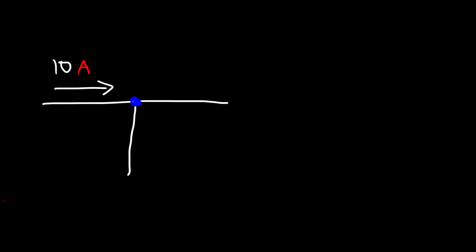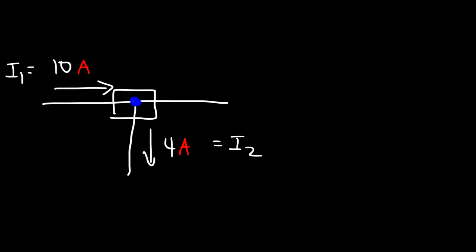Let's work out a basic example. Here's the junction. Let's say we have 10 amps of current flowing into the junction — we'll call this I1 — and 4 amps of current flowing in another direction — we'll call this I2. Because I1 is flowing into the junction, it's positive 10 amps. The 4 amp current, I2, is leaving the junction, so it's negative 4 amps.